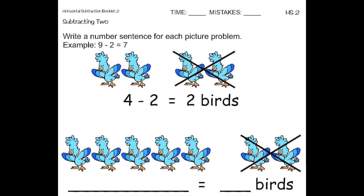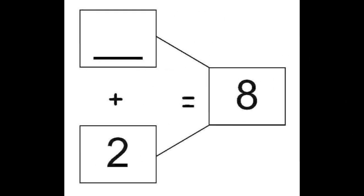Now, let's work on the picture problem beneath that. Here we have 7 birds to start out with, and then 2 flew away. So, we have 7 minus 2. How many birds are left? Well, 7 minus 2 equals 5, so there are 5 birds left. Now let's look at the bottom of the same page. Here we have 1 number on the left and the solution on the right. So, we need to figure out what plus 2 equals 8. Another way to figure it out is to subtract 2 from 8. So, 8 minus 2 equals 6, meaning 6 plus 2 equals 8.